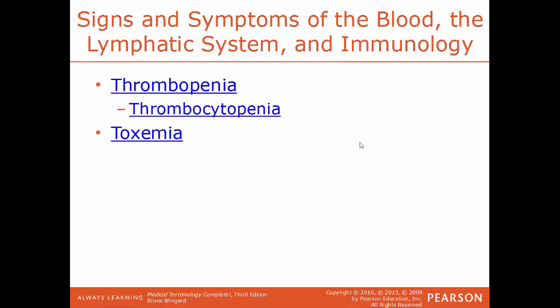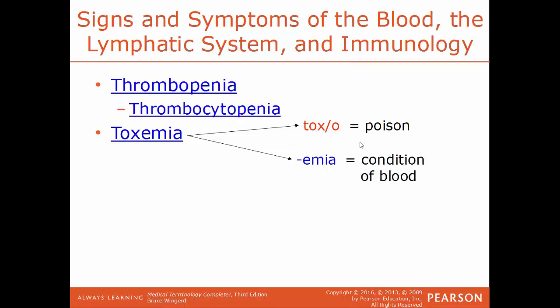Toxemia refers to poison within the blood, usually due to a bacterial presence. This condition is also known as preeclampsia, which is the more commonly used term. Breaking it down: toxo means poison, and -emia means a condition of the blood — so it literally means having poison in the blood.